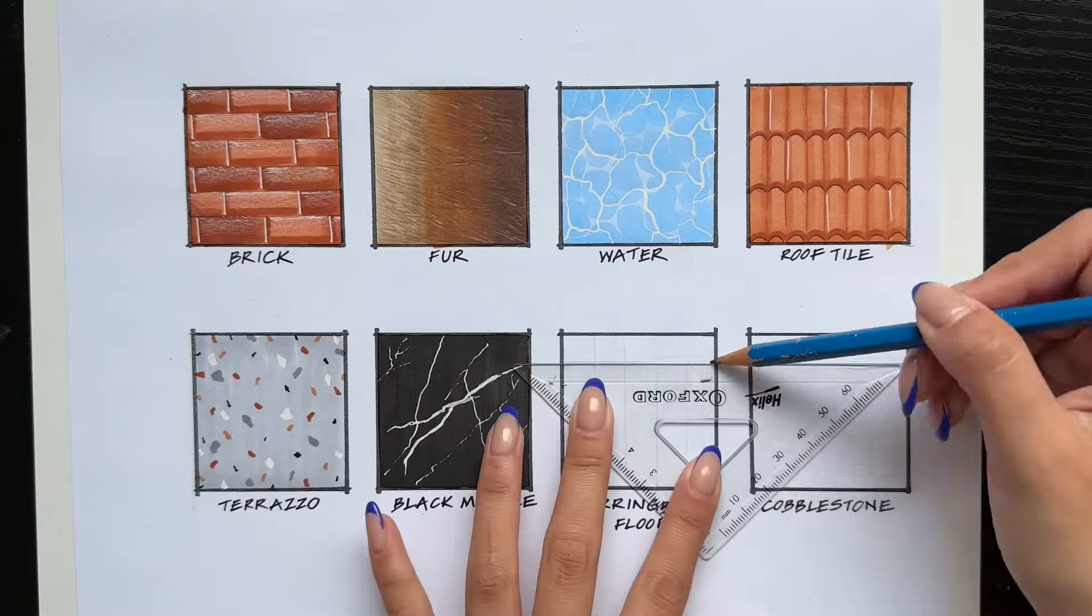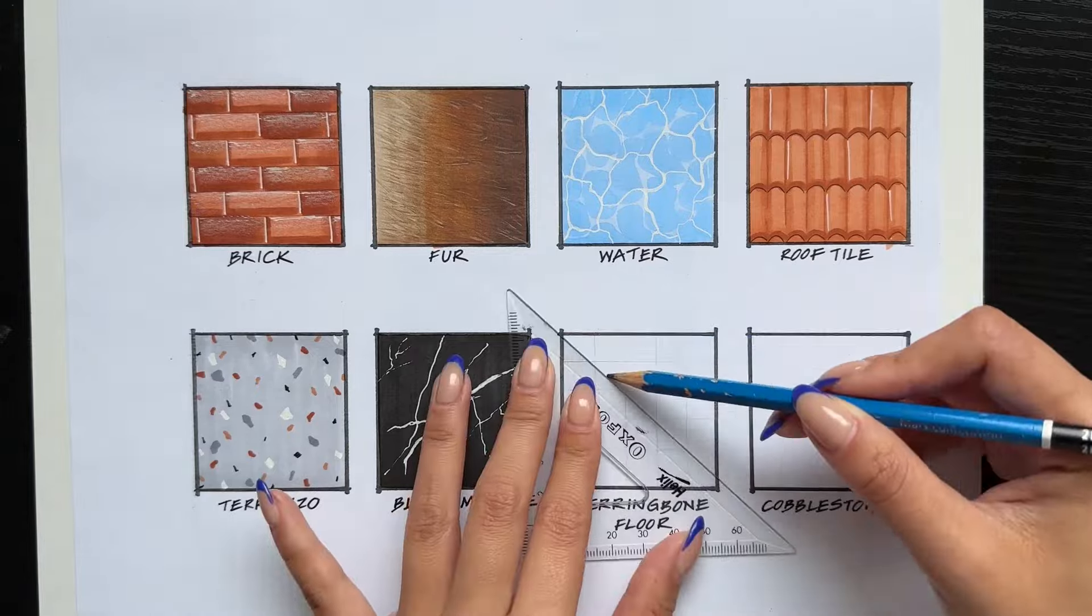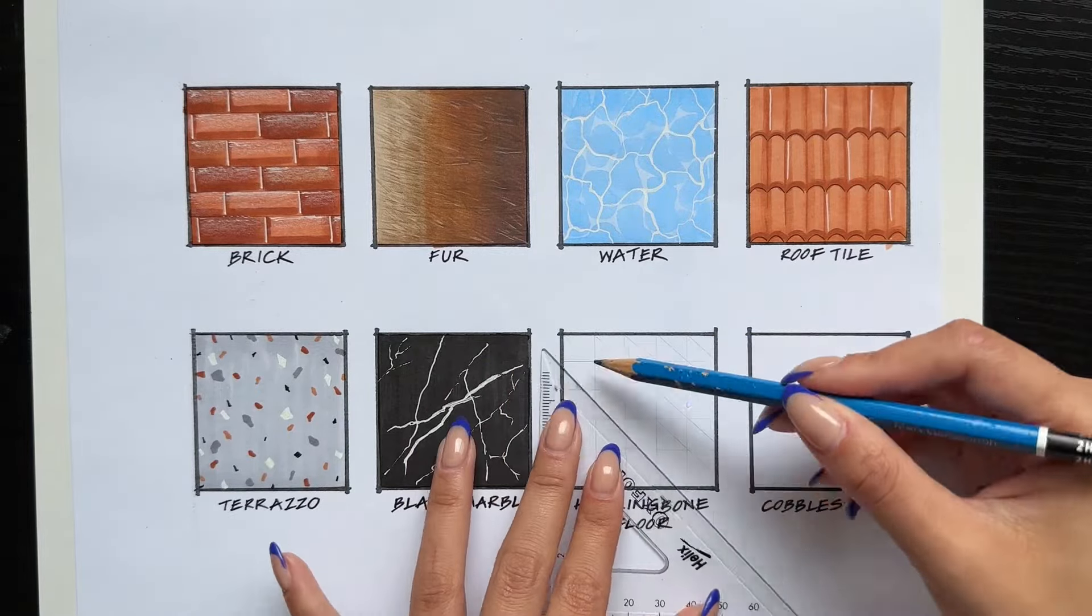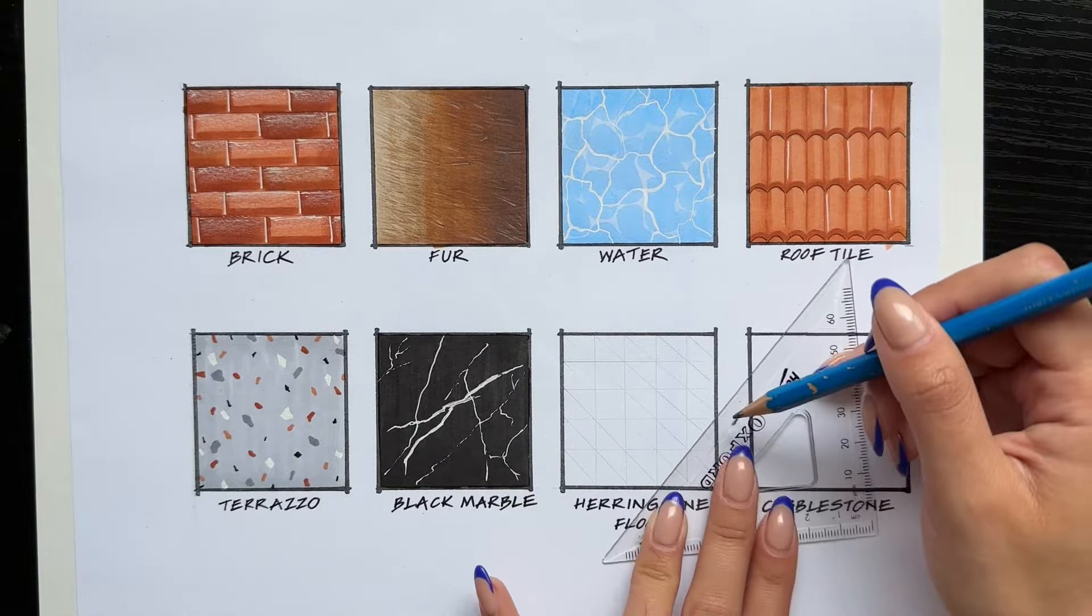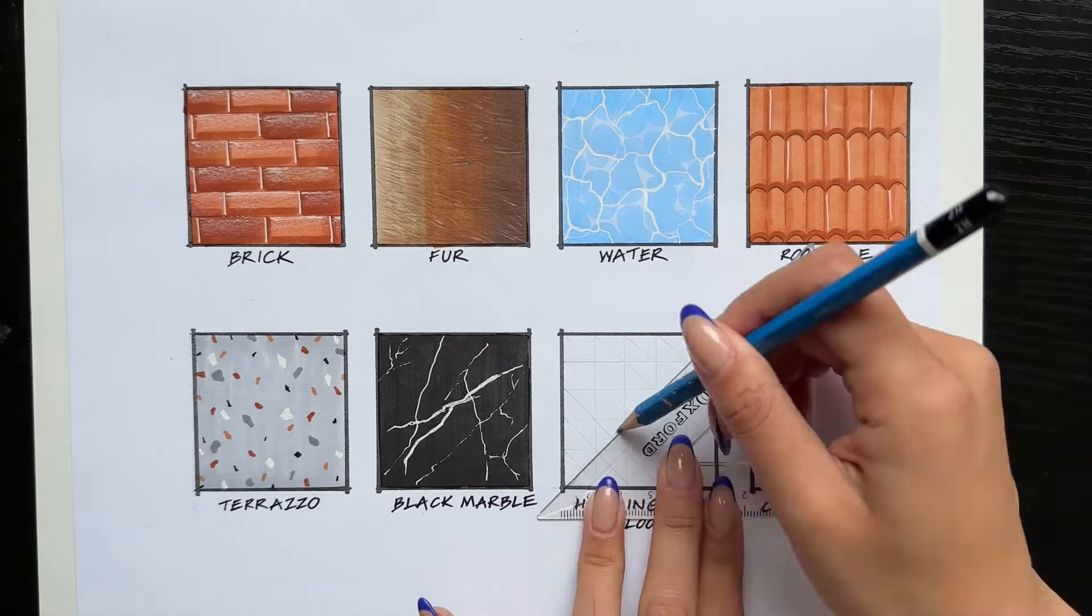Herringbone flooring is super popular these days. Taking a ruler, you're going to create a grid system. This one's about five by five, or whatever I could fit in there. And then you're going to connect all the diagonals.